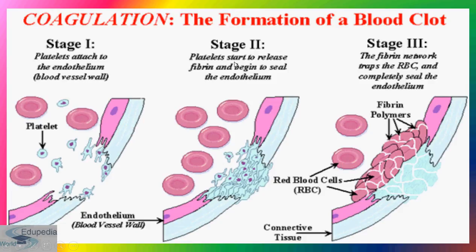In stage two, the platelets start to release fibrin and begin to seal the endothelium. You can see these platelets have released fibrin, which begins to seal the blood vessel wall, eventually sealing the entire endothelium. In stage three, the fibrin network traps the RBCs. These fibrin polymers form a network that traps the RBCs and completely seals the endothelium.